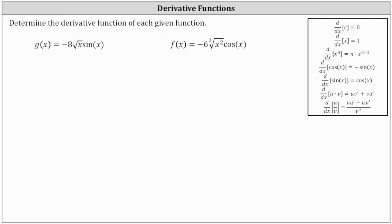We're asked to find the derivative function of each given function. First, we have g of x equals negative 8 square root x times sine x. Because g of x is a product of two functions of x, we will need to apply the product rule of differentiation to find the derivative.